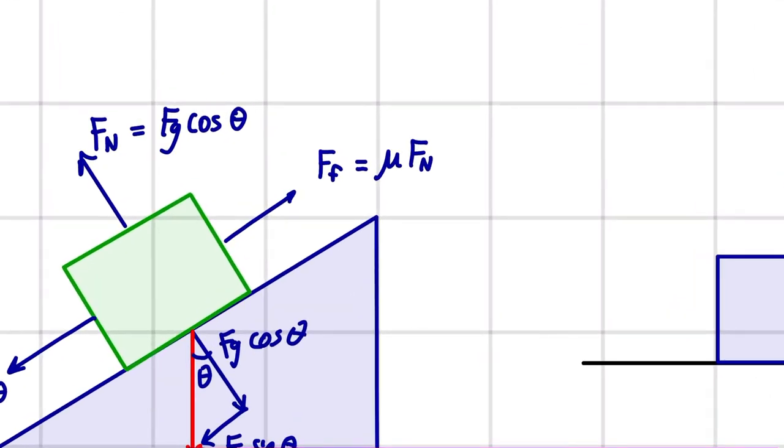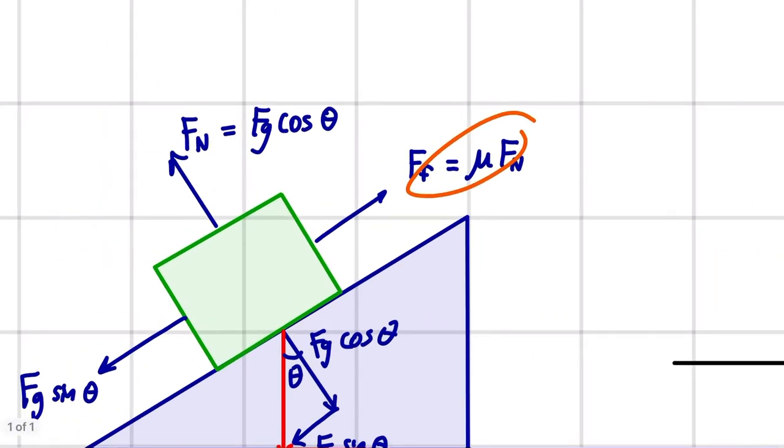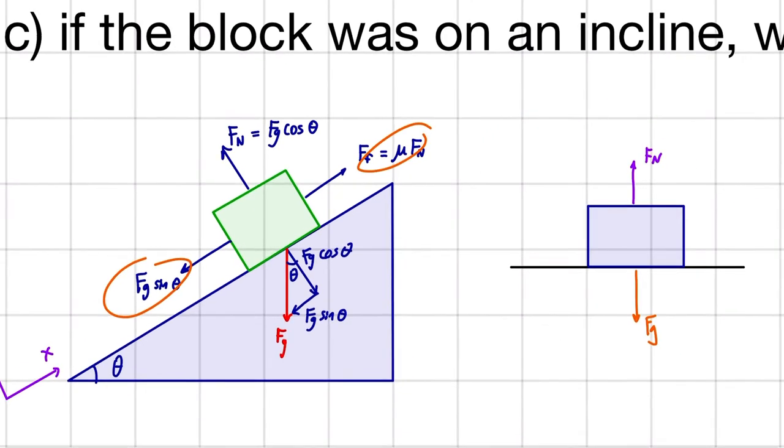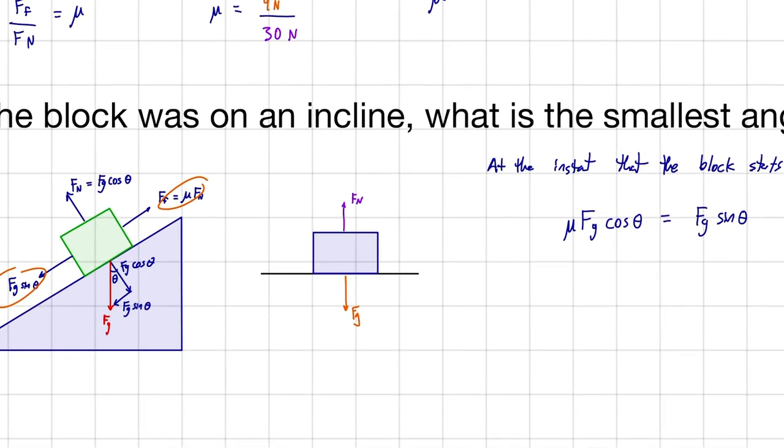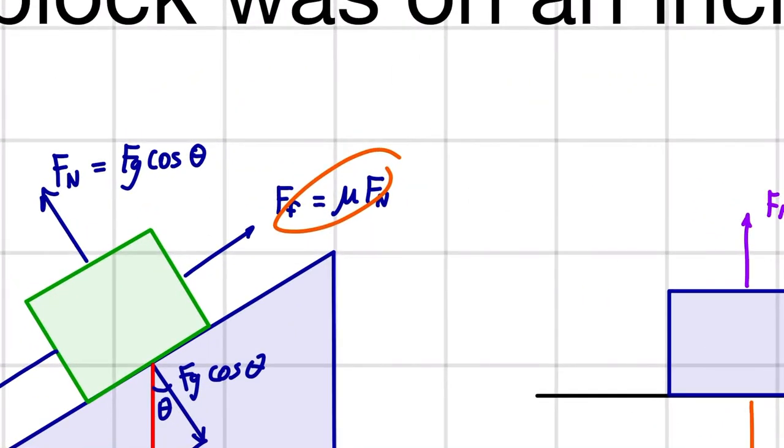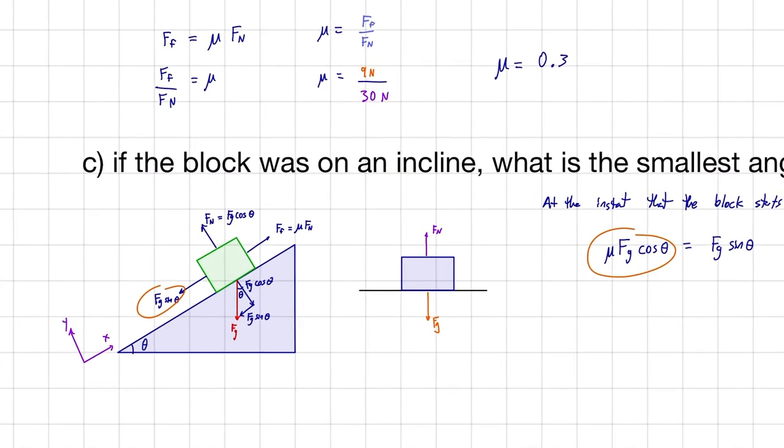And that comes from this formula here and this formula here. So our mu Fg cos theta, well, that's our mu times Fn, because Fn is Fg cos theta. And then our other term over here, Fg sin theta, well, that's just the force pulling our block down the ramp.